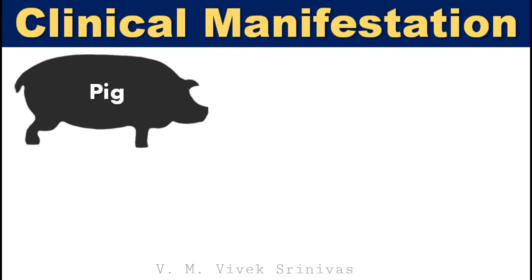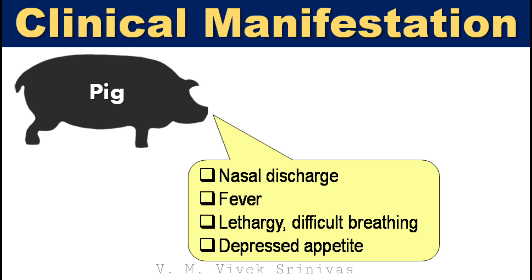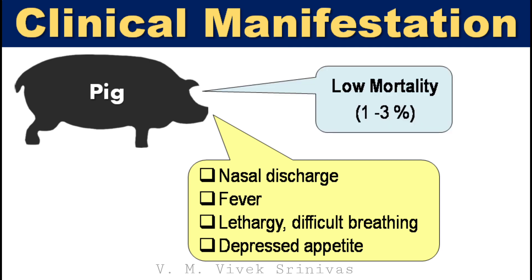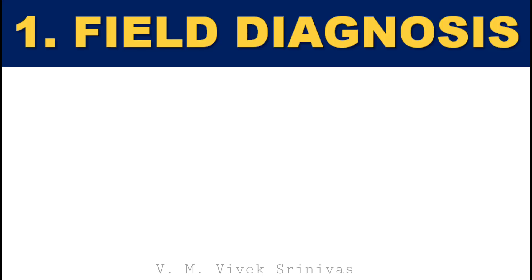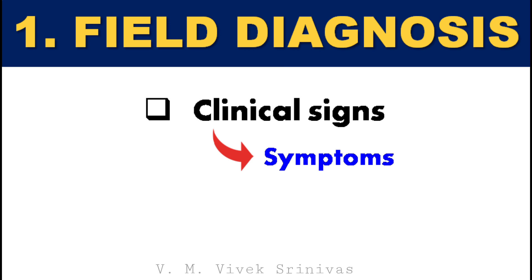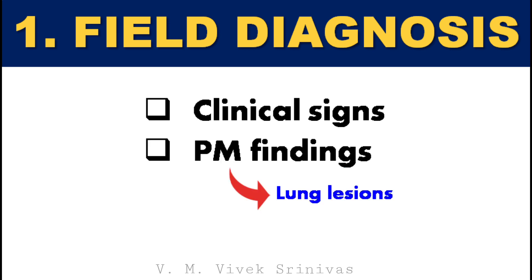Clinical Manifestations: This infection is characterized by coughing, sneezing, nasal discharge, fever, lethargy, difficult breathing, and depressed appetite in pigs, with a low mortality rate of 1 to 3%. Diagnosis can be done at field level or in laboratories. Field diagnosis is based on clinical symptoms and post-mortem findings like lung lesions, though these lesions are not pathognomonic and must be confirmed by isolation followed by laboratory testing.